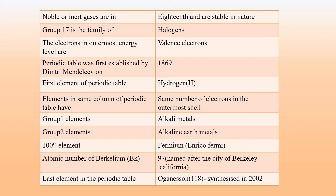The atomic number of Berkelium is 97. Berkelium was named after the city Berkeley in California. The last element in the Periodic Table is Oganesson, synthesized in 2002.